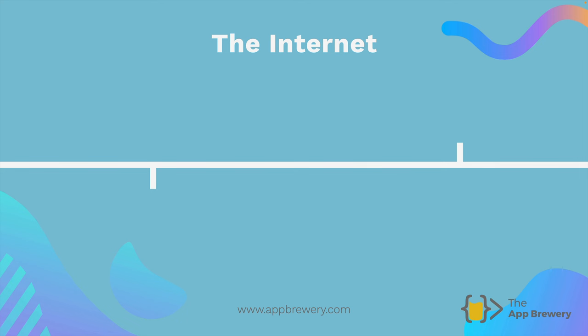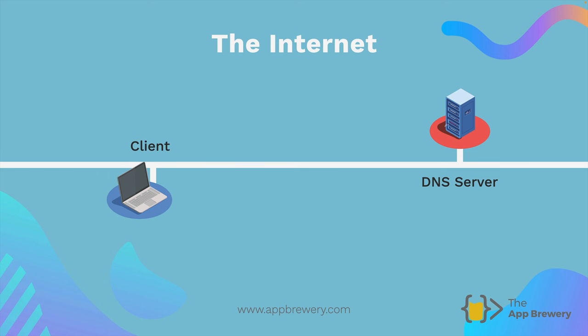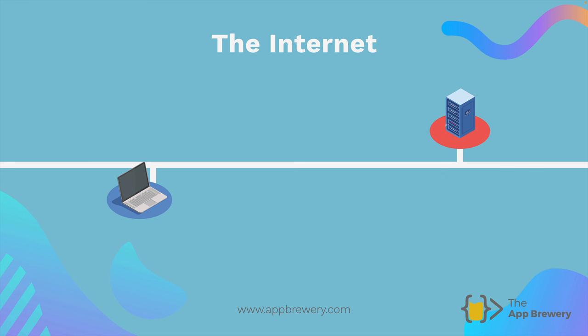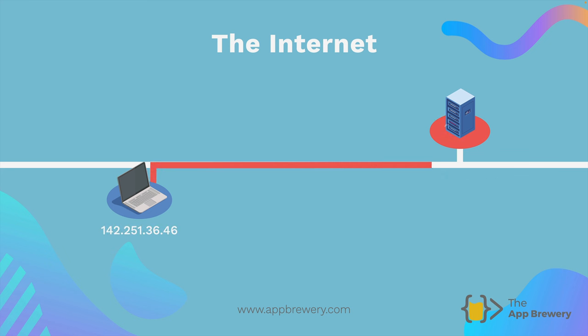Previously on the Complete Web Development Bootcamp you learned that the internet consists of a wire that connects client computers with server computers, and that there are special kinds of server computers called domain name service servers which act as a big old yellow pages phone book and can look up the IP address of any website you want to access. When you find that IP address you can directly hit up the server computer for the website you want to view, and they'll send you all the files and data for your browser to be able to render it on screen.